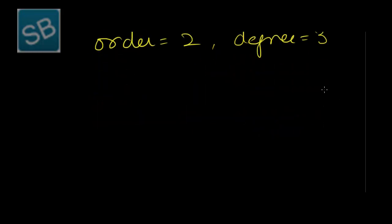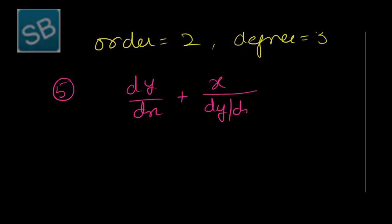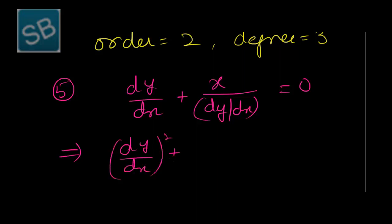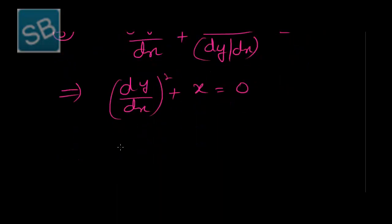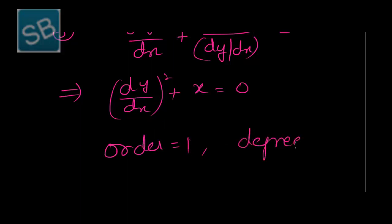Problem 5: dy/dx + x/(dy/dx) = 0. On solving, multiplying through, we get (dy/dx)² + x = 0. Now the order is 1 since the only derivative is dy/dx, and the degree is 2 because the power of the highest order derivative is 2.